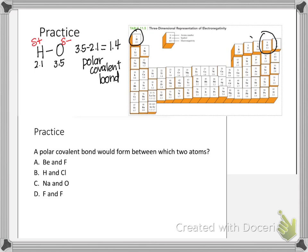For a second example, take nitrogen bonded to another nitrogen. Any time you have two of the same nonmetal bonded together, they have identical electronegativities, so their difference is zero. If the difference is zero, this is a nonpolar covalent bond. Remember, the difference doesn't have to be exactly zero to be nonpolar — it can be up to 0.4. Once you reach 0.5, you're no longer sharing equally. A difference of 0.3 or 0.4 is still considered equal sharing, so it's nonpolar.